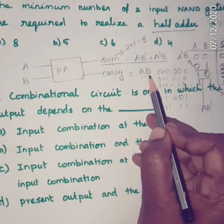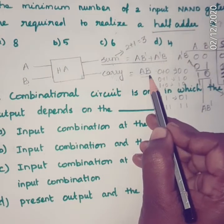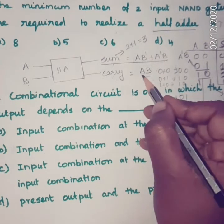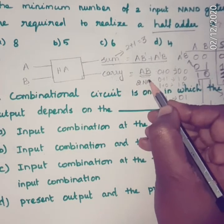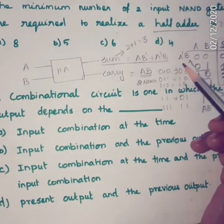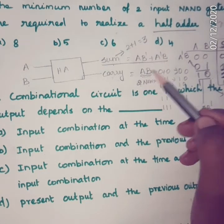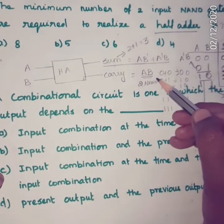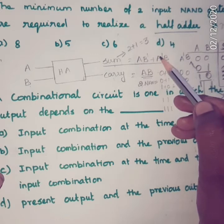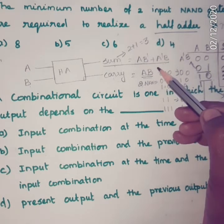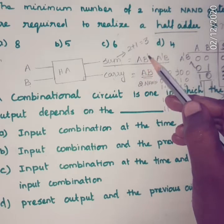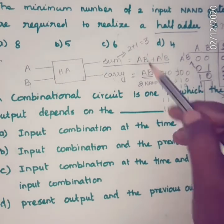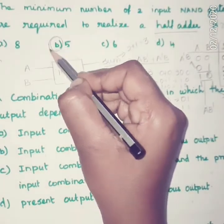For carry, the expression is AB, which is an AND operation. To implement AND using NAND gates, we need 2 NAND gates. So in total, 3 + 2 = 5 NAND gates. We are not counting separate NAND gates for A̅ and B̅ — we assume they are already available. Therefore, the minimum number of NAND gates required is 5, so option B is the correct answer.